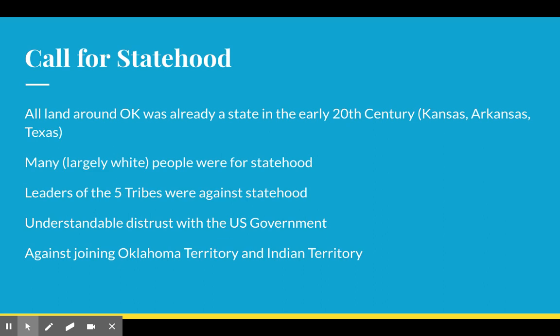The leaders of the five tribes in Indian Territory — again, that's the eastern part of Oklahoma — are against statehood. And they're against joining Oklahoma and Indian Territories into one because the culture of these five tribes are very different than the culture of the Plains Tribes. The Plains Tribes exist in the Great Plains; the five civilized tribes come from the Southeast, not the Plains, so they're not culturally very similar. So they're not going to be really for this statehood push by people in Oklahoma Territory.